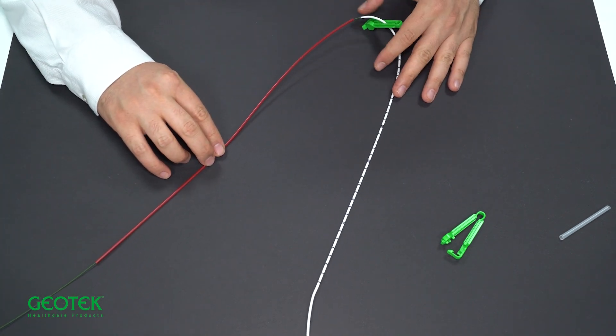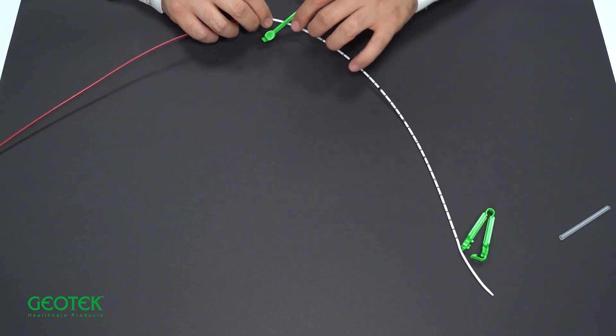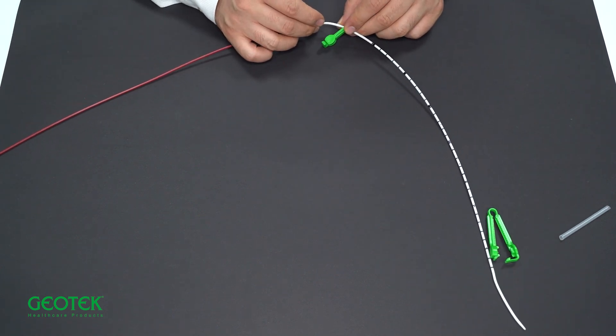When we see that it reaches the ureter through our cystoscope, we can open the clip and pull the guidewire.